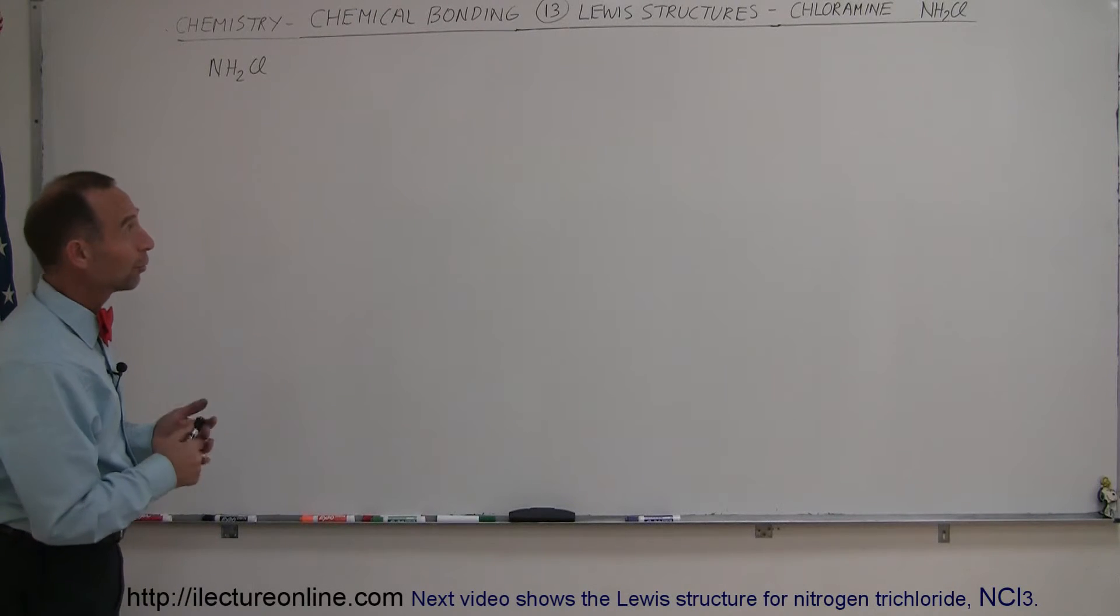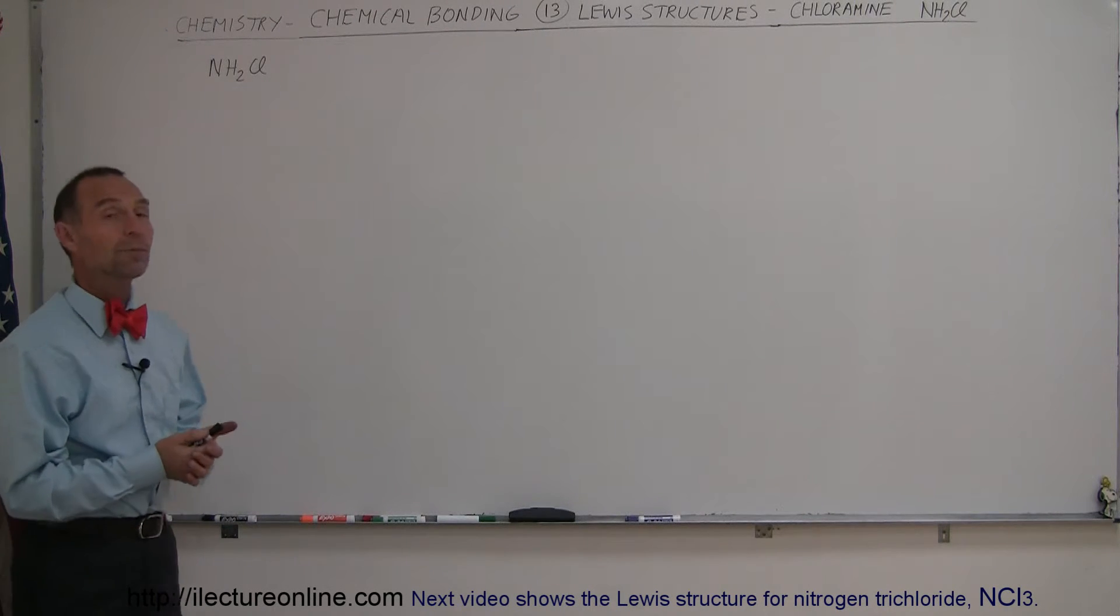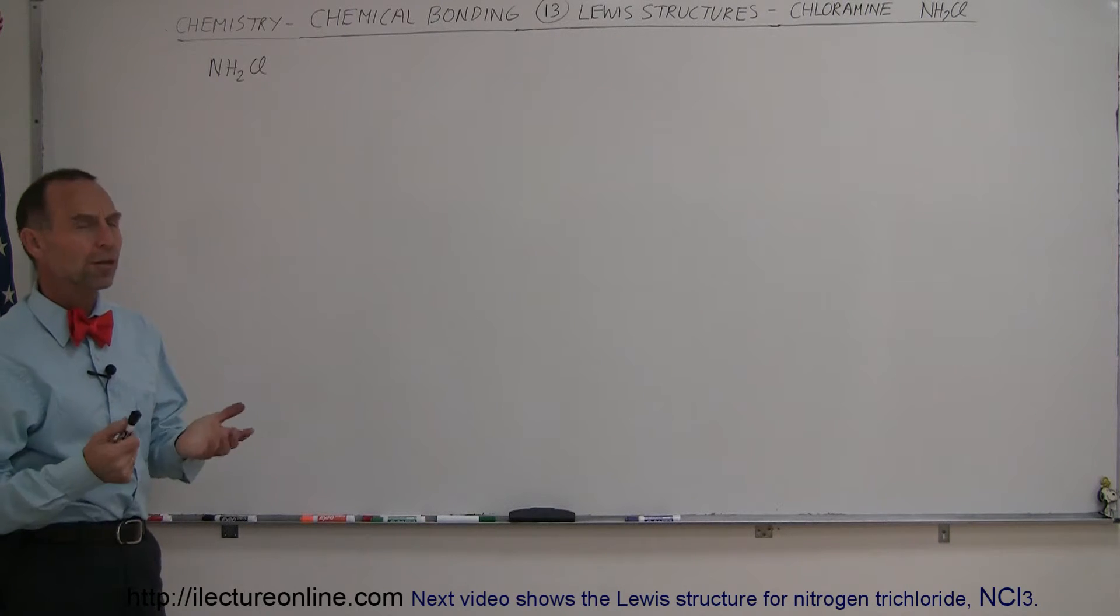Our next example of how to draw Lewis structures is going to be chloramine, which is NH2Cl. How do we draw that?